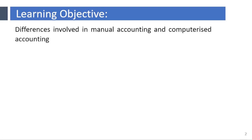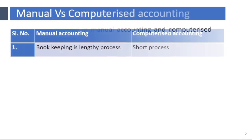Hello viewers. In this video we are going to be discussing the key differences involved in manual and computerized accounting. In manual accounting, bookkeeping is a lengthy process, and in computerized accounting bookkeeping is a short process.